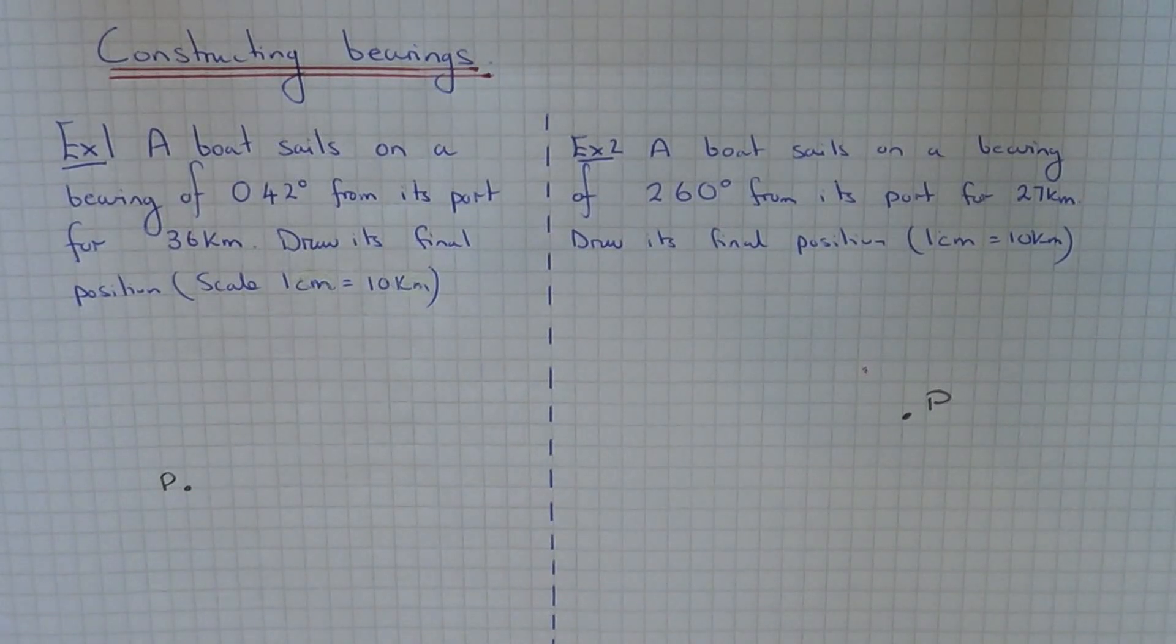Today I'm going to show you a couple of examples on how to draw out a bearing. Let's have a look at example one. A boat sails on a bearing of 042 degrees from its port for 36km. We've got to draw its final position and the scale on the map is 1cm to 10km.